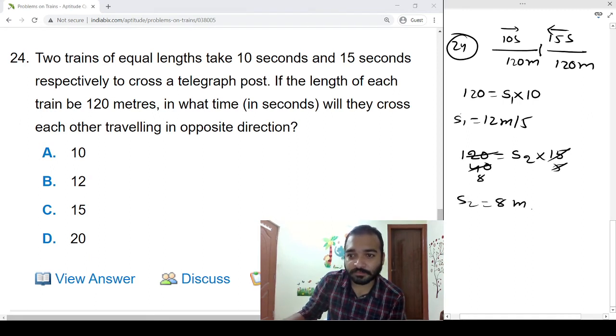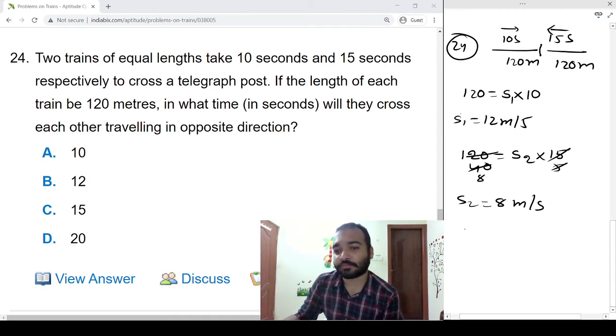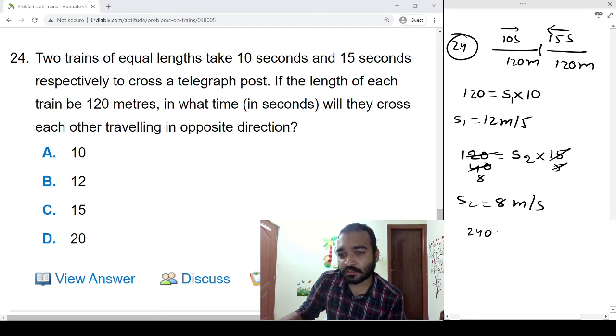Second train is crossing in 15 seconds. 3 table 40 times 3 table 5, 8, so s2 is equal to 8 meter per second. In the third case they are moving in opposite direction, we need to find out how much time it will take.